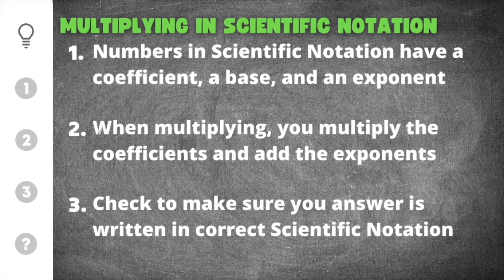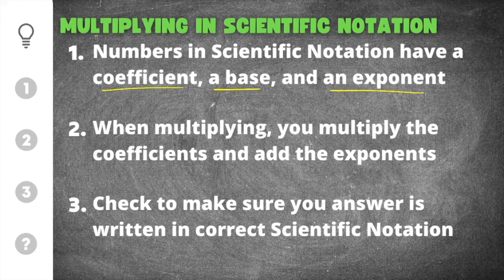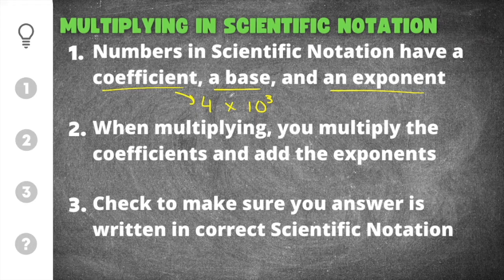There are three important things we need to remember when multiplying in scientific notation. The first is that numbers in scientific notation have a coefficient, a base, and an exponent. For example, the number 4,000 in scientific notation would be 4 times 10 to the 3rd power. The coefficient is 4, the base will always be 10, and the exponent is the exponent on our base of 10.